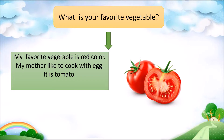I will read for you again and then you will repeat after me, all together. My favorite vegetable is red color. My mother likes to cook with it. It is tomato. Please, my students, repeat after me.